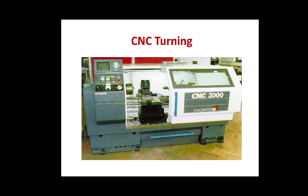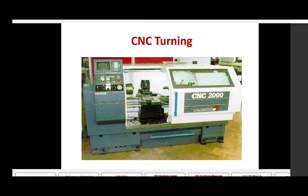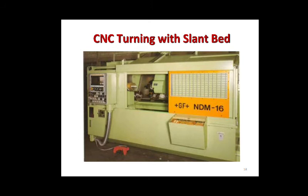This is a CNC turning machine — model CNC 2000. As you can see, only one operator is needed to produce many products. The role of the operator is only to load and unload the job. There is no need to control the movement of the machine by hand, as required in traditional machining processes. This next machine is a CNC turning machine with a slant bed, and you can close the front door, making it safe to operate.